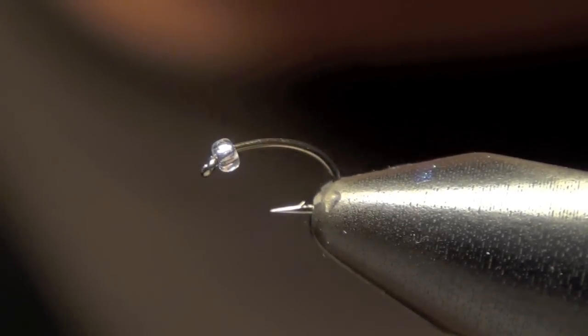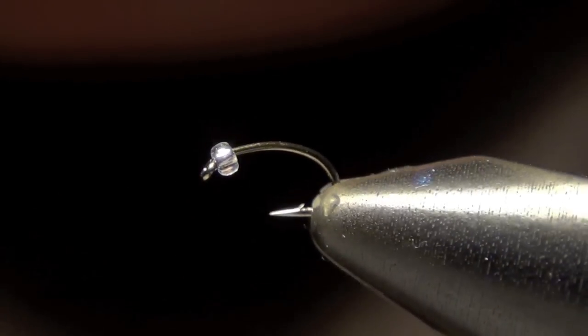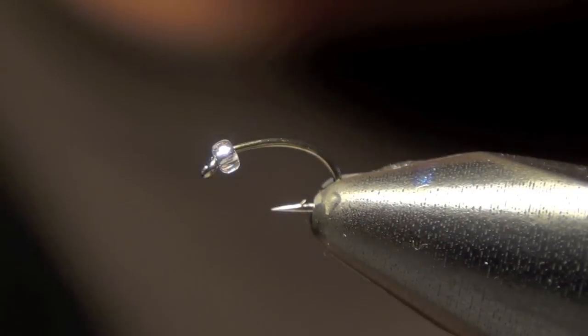What we're going to be tying here today is going to be a rainbow warrior. What I've done is just slid on a small glass midge bead there to the front of the hook.